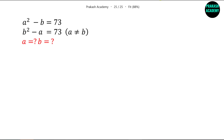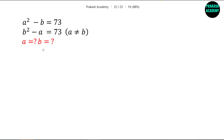In this problem we have been given two equations and we have to find the value of A and B. The first equation is A² minus B equals 73, and the second equation is B² minus A also equals 73. It is also given that A is not equal to B, meaning A and B are different values. So how will we find the value of A and B using these two equations?